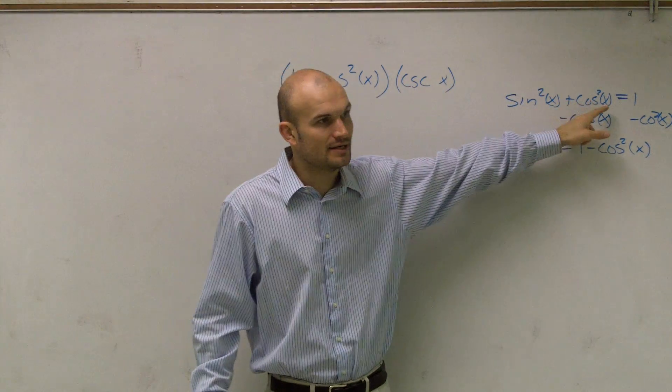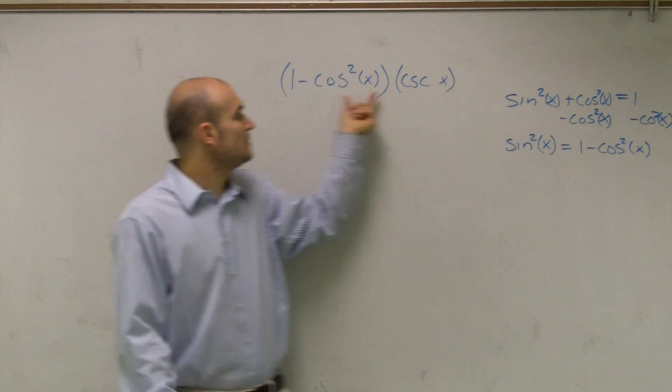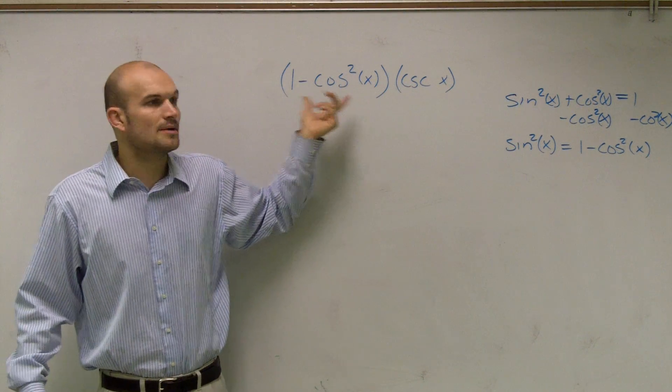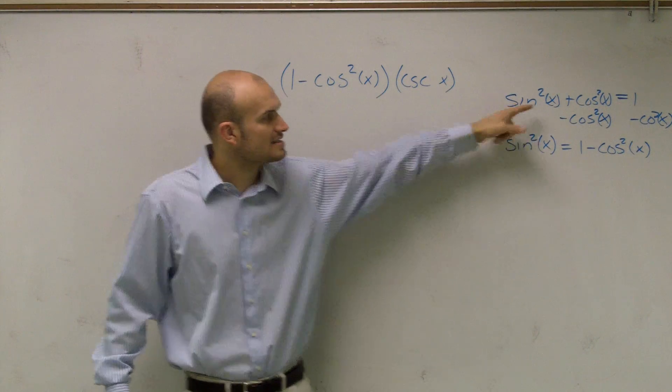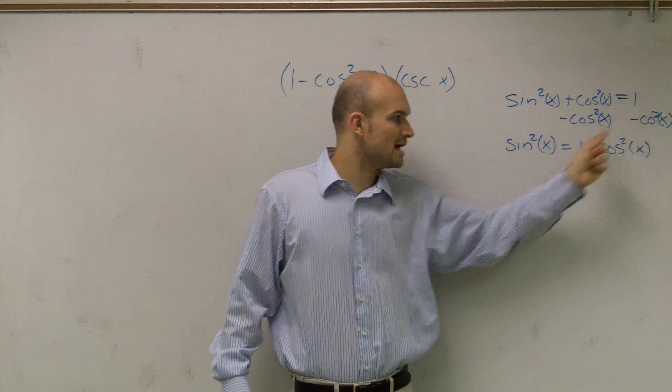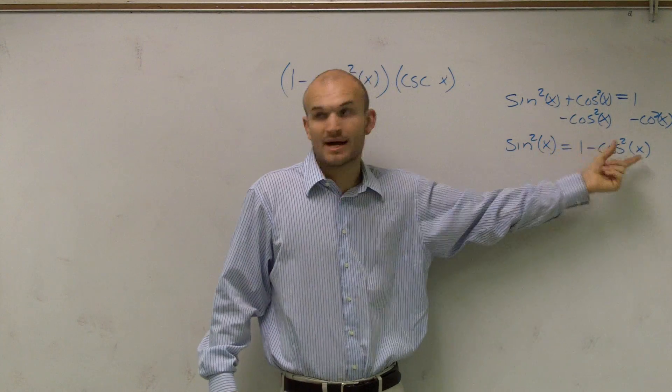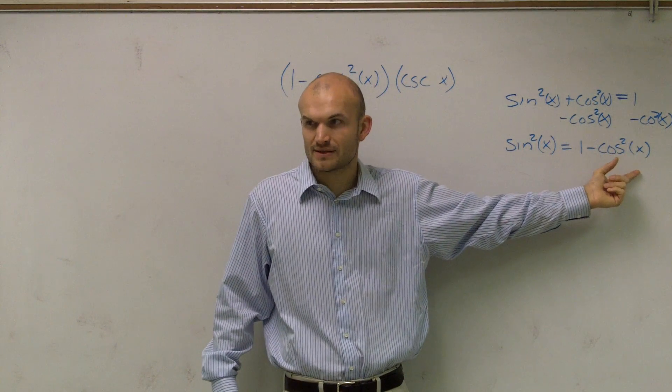So you write your trig identity. And I said, can I transform this identity to something else? Well, obviously, to sine. And yes, if you subtract the cosine squared to the other side, you get sine squared equals 1 minus cosine squared. Does everybody see how I did that and what it looks like?